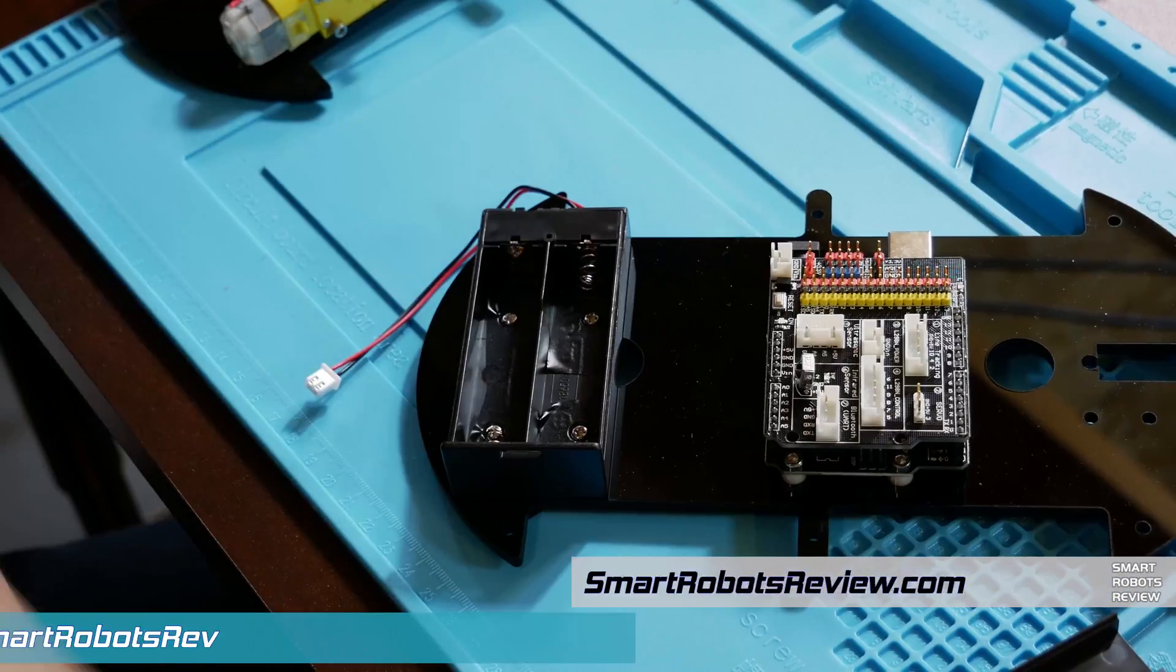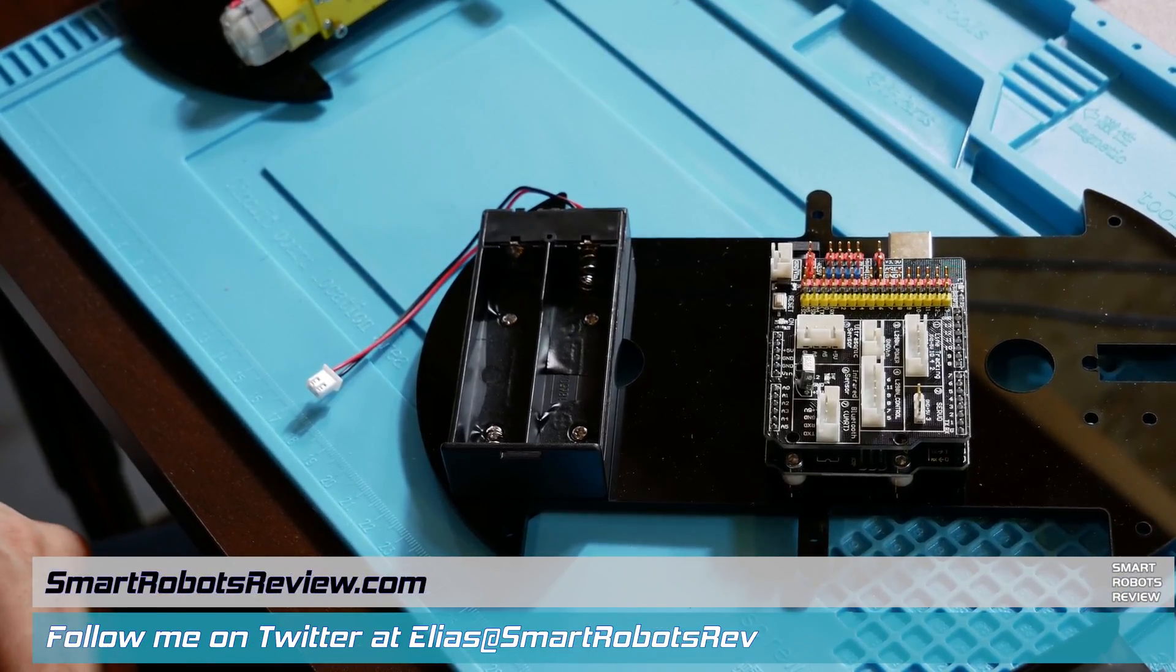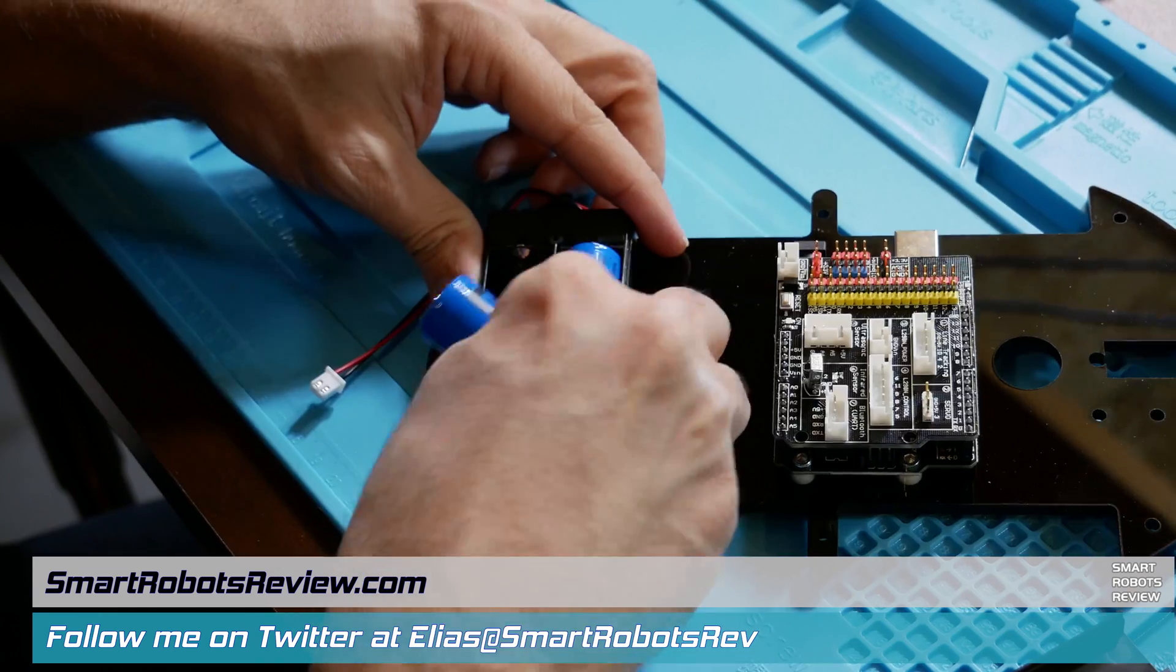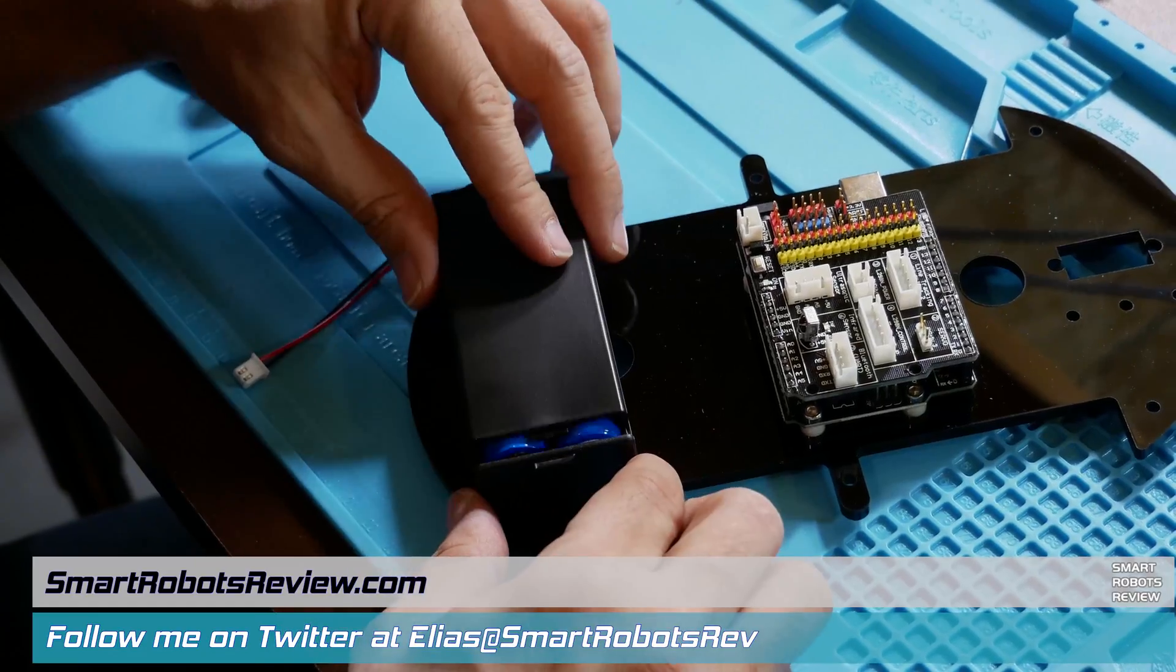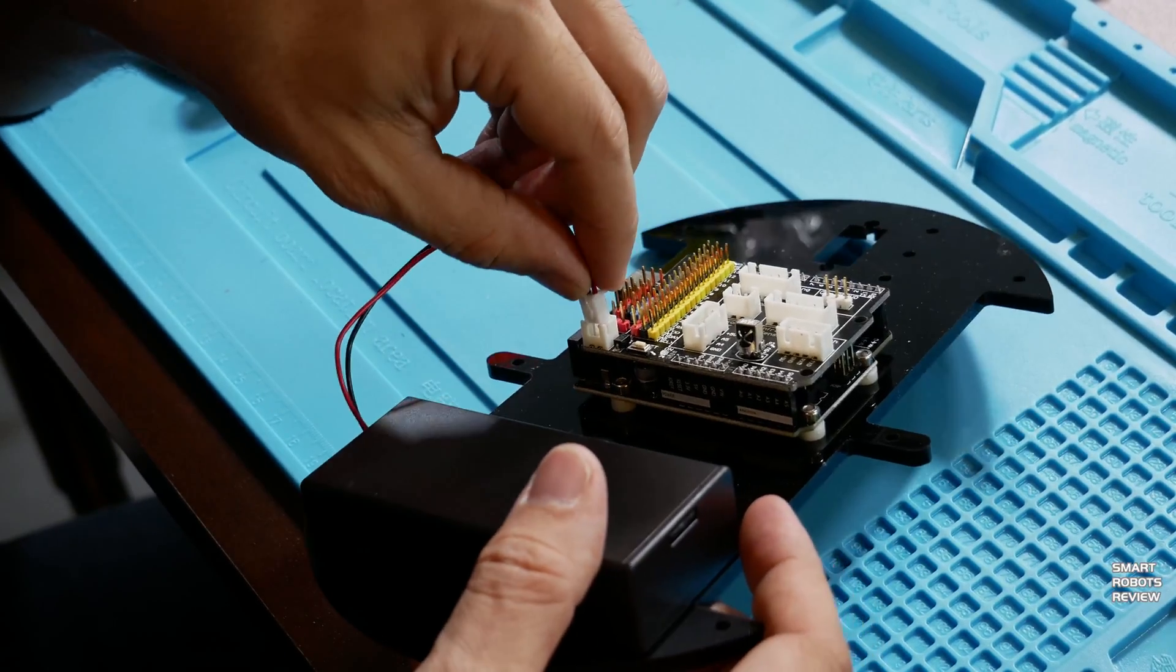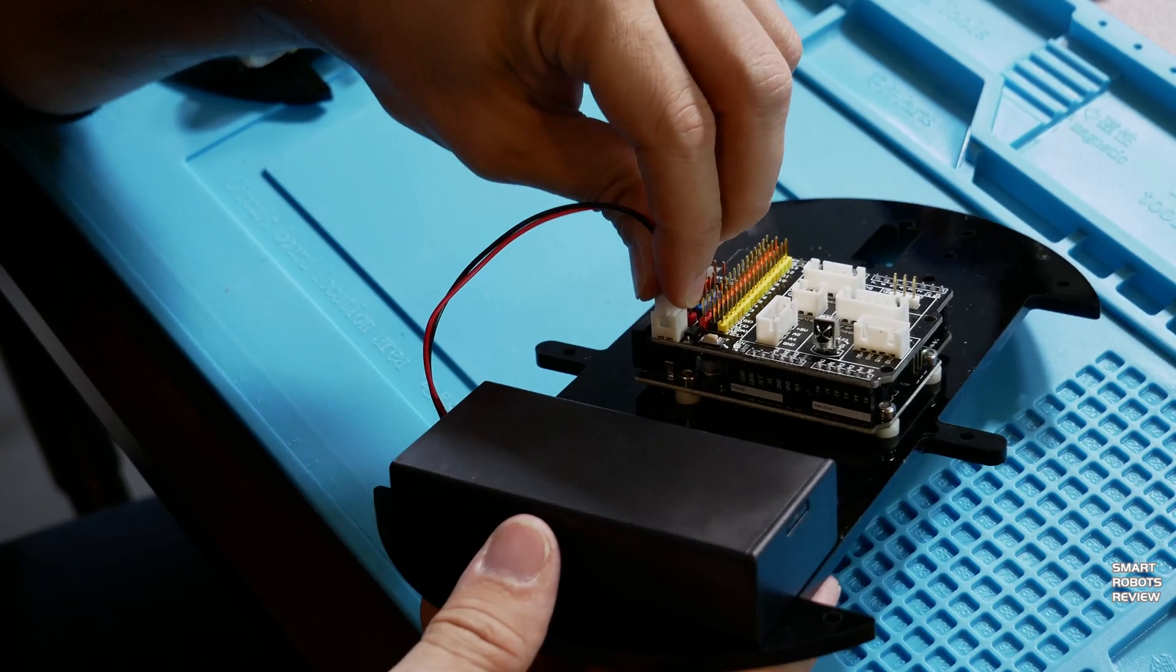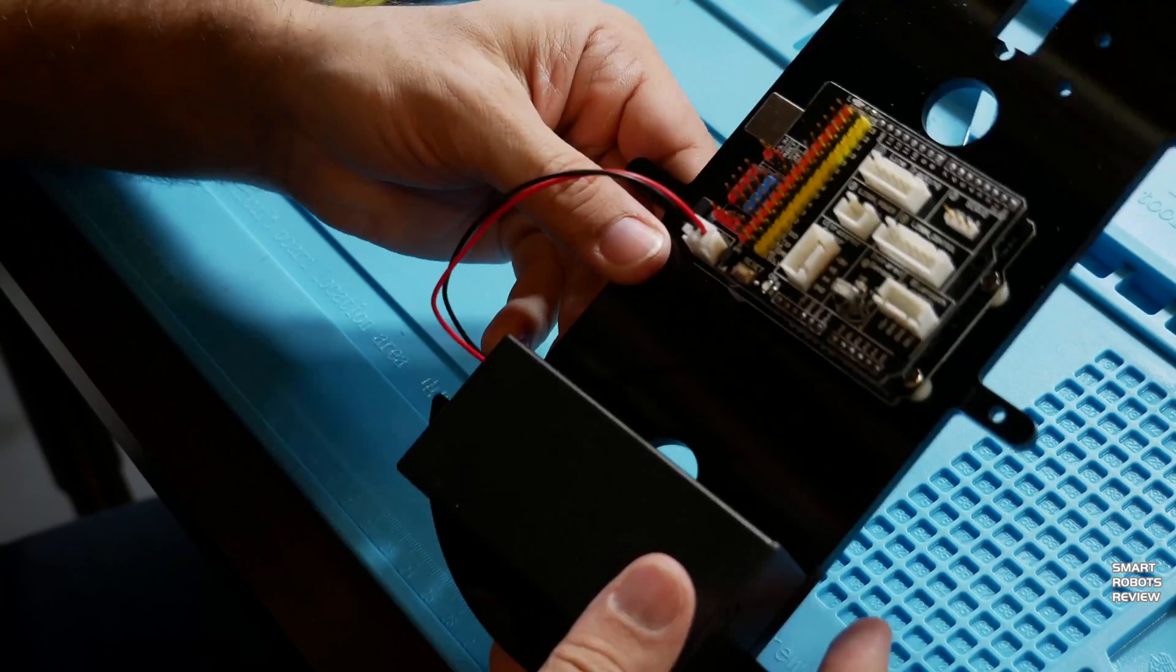Now let's grab those batteries, those rechargeable batteries that came with the kit and let's get them installed. Each battery compartment is marked with the right polarity so follow those instructions. Replace the battery cover and now it's time to connect the power cable onto the main Arduino board just like this. There we go and we're done.